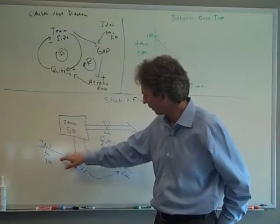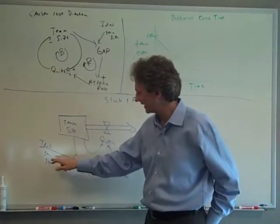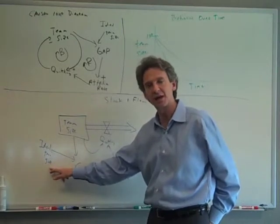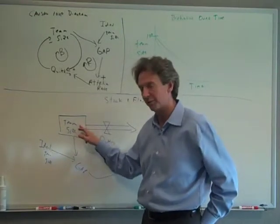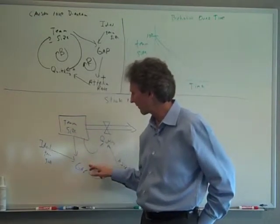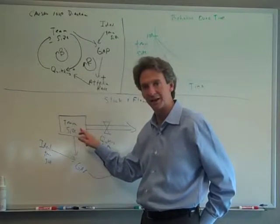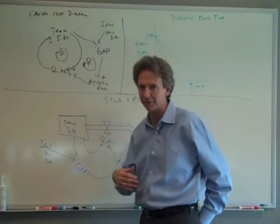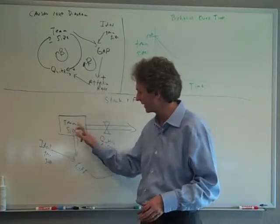Basically, you've got the ideal team size and we're going to say that's a fixed number. Let's say that's a hundred people. Let's say we start with a hundred people and then the gap is really the ideal minus the team size. So the gap might be a few people and then ten people and then fifteen people. The gap will be this minus this.